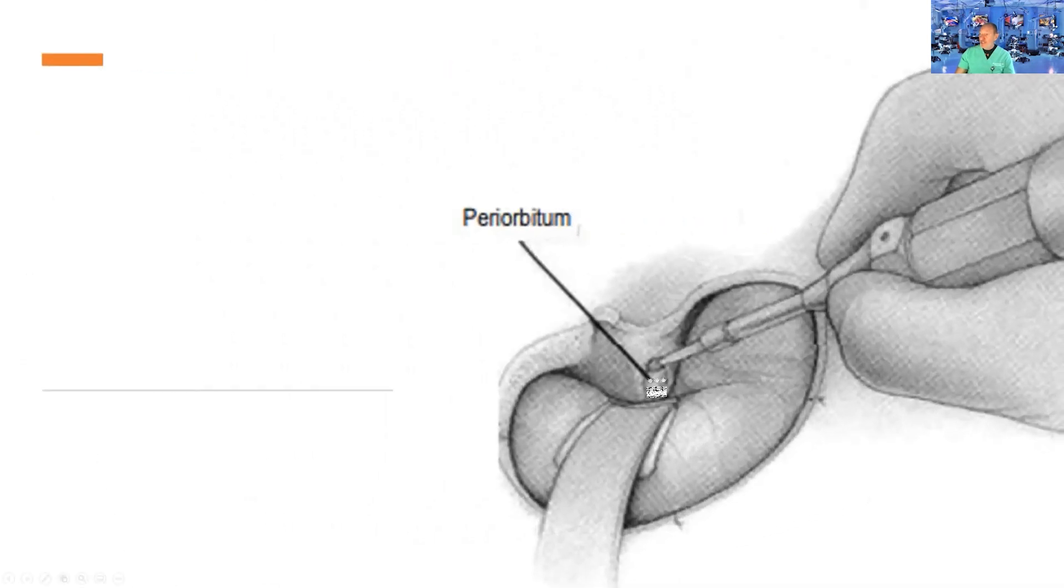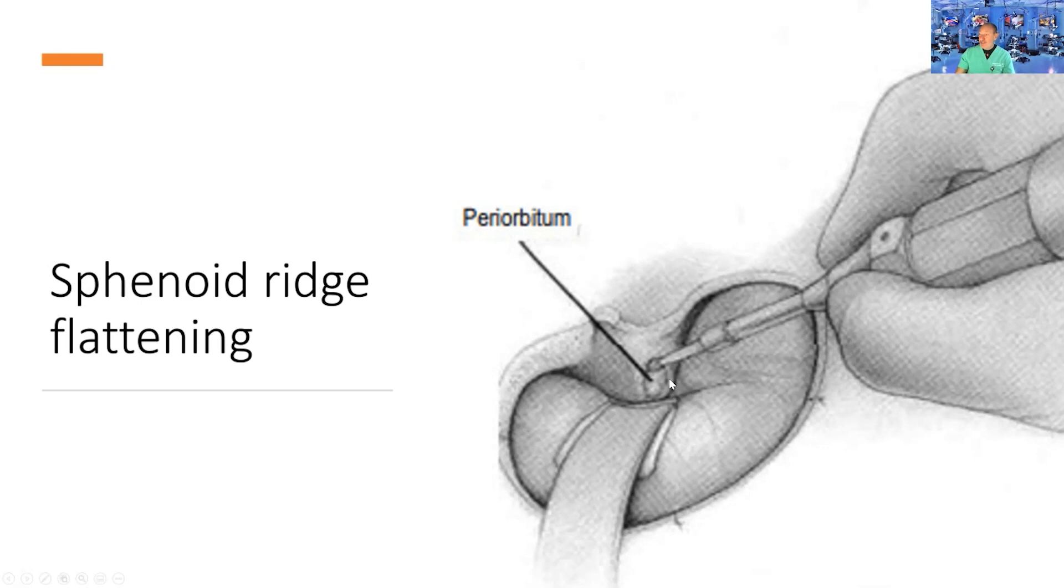Once elevated, flatten down the sphenoid ridge using a cutting burr. This allows you to be as basal as possible. Once you open the Sylvian fissure, you minimize spatula on the temporal and frontal lobes. This is the same concept from skull base surgery that every neurosurgeon should apply.